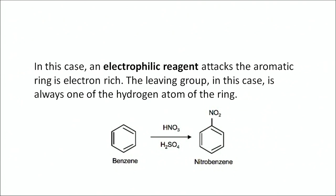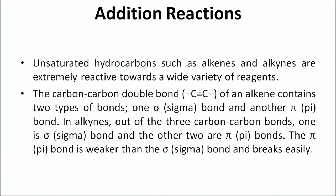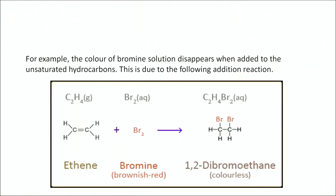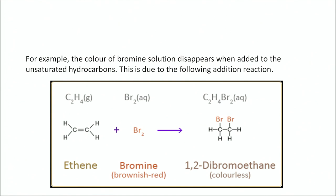Next is addition reaction. Addition reactions generally take place in unsaturated hydrocarbons such as alkenes and alkynes, which are extremely reactive towards a wide variety of reagents. The double bond is broken and the reacting compound is added to it. For example, ethene is taken and bromine is added to it — the double bond is broken and the Br₂ molecule is completely added. This is called an addition reaction.